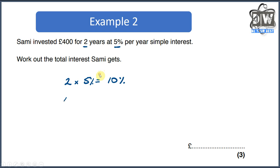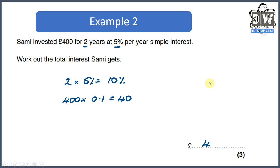Now we're going to use that information in a simple way. We take our £400 and multiply it by 0.1, because that is 10 percent as a decimal. Put that into a calculator and it gives us £40. The reason I haven't used 1.1 is because it's only asking for the interest, not the total amount. So Sammy would get interest of £40 after two years — five percent plus another five percent equals ten percent.